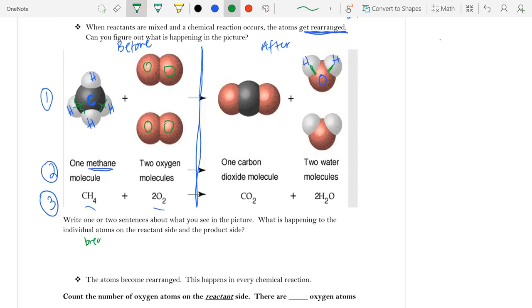The individual atoms on the reactant side and the product side, they're not disappearing or appearing from nowhere, but they're just kind of moving around. They're changing places, right?